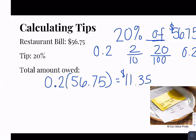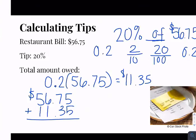So two-tenths times $56.75, we get $11.35. So that's 20% of our bill. That means we have to pay that in addition to the $56.75. So now we're going to take our $56.75 and add $11.35 to see what the total is going to be. So our total is $68.10 because we're adding that 20% on to our bill.